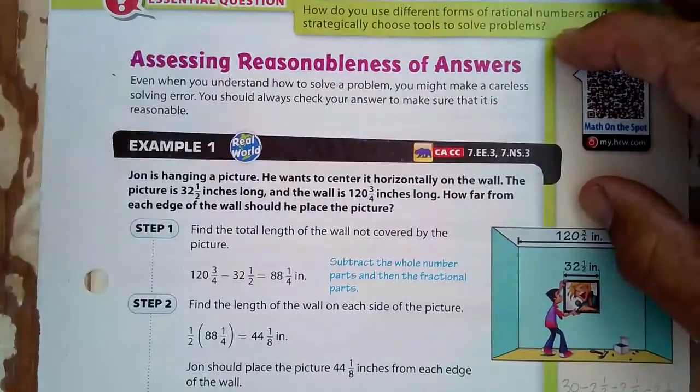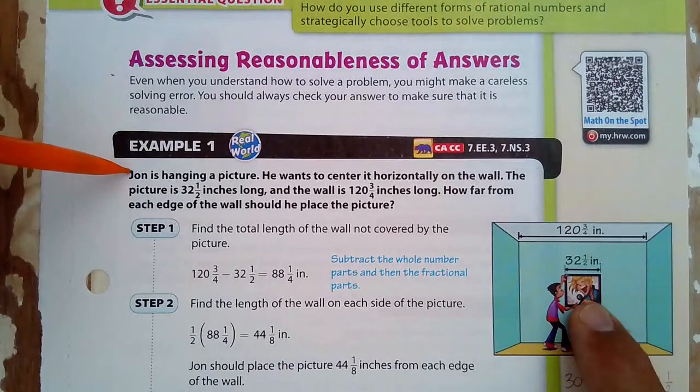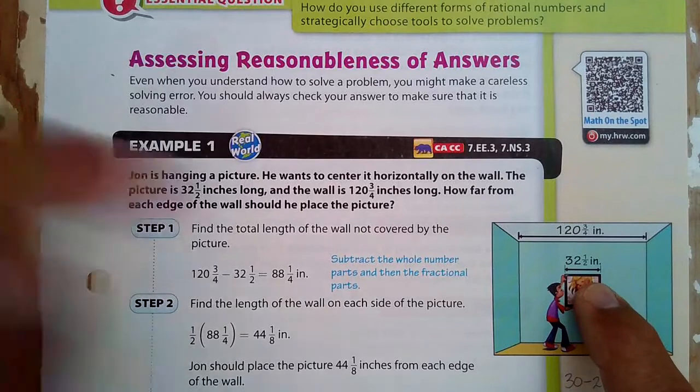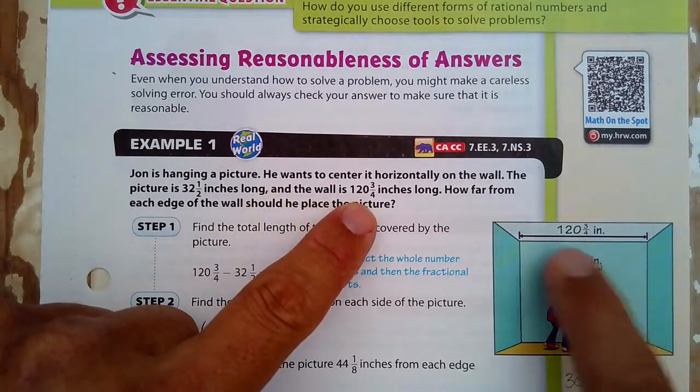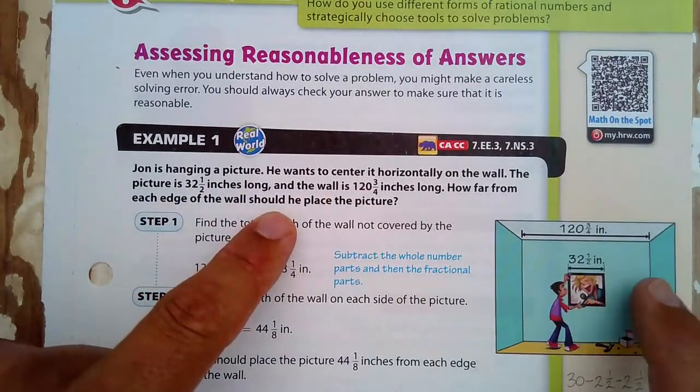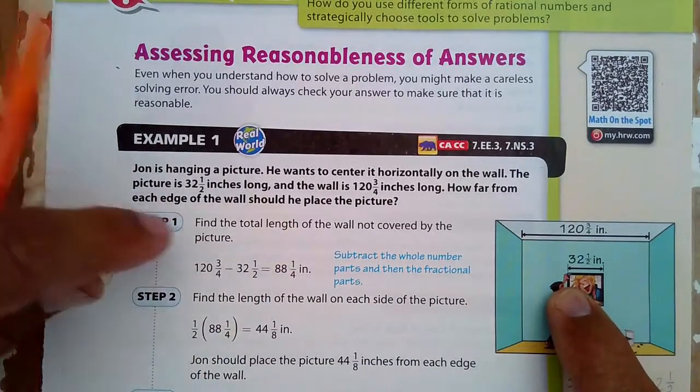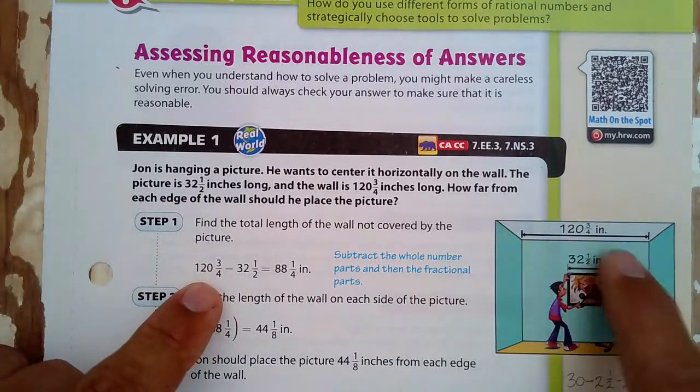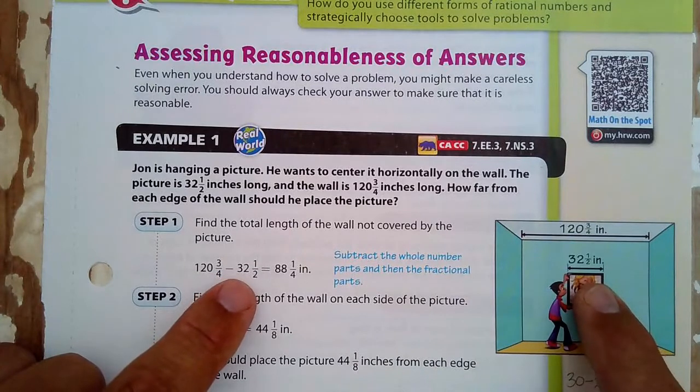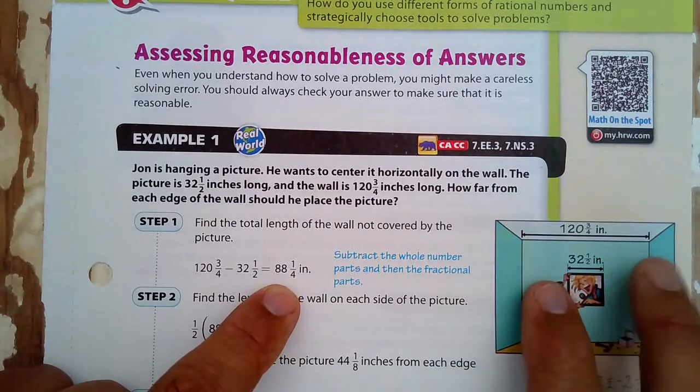In example one, we have John is hanging a picture. He wants to center it horizontally on the wall, so that's side to side. The picture is 32 and a half inches long. There's the 32 and a half right there. The wall is 120 and 3/4 inches long. How far from each edge of the wall should he place the picture? So he's putting it in the middle. Okay, so we're first going to use the total length 120 and we're going to subtract the distance of that picture right there. So that means that 88 and 1/4 inches is the total distance of both of these right here.